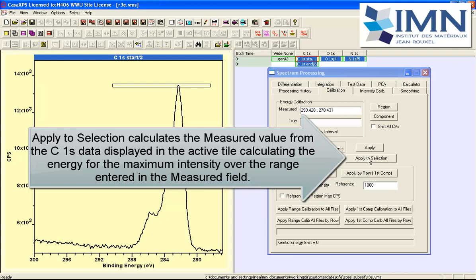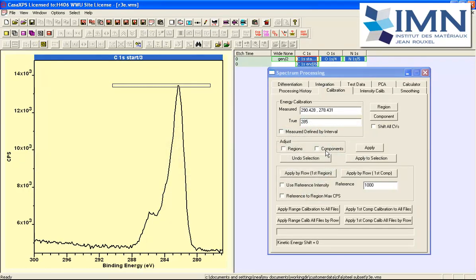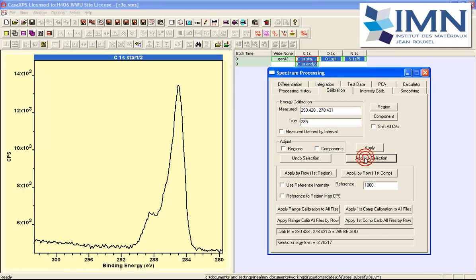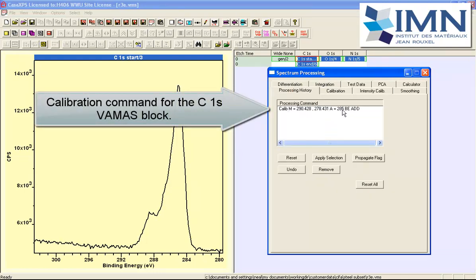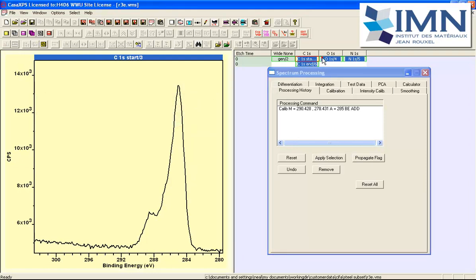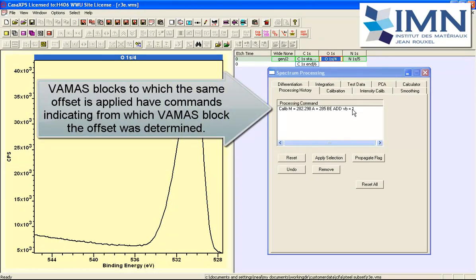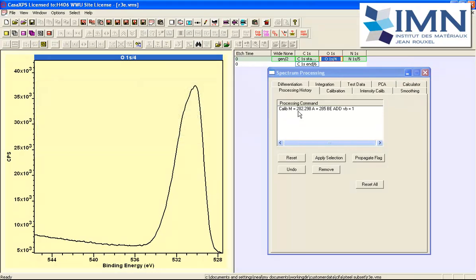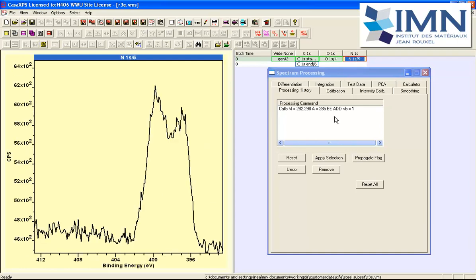We have no regions and no components defined so in this case we don't need to tick those boxes and we just say apply to the selection. The selection is this selection in the right hand side and all of these now receive an instruction that is based on the calculation that's performed on the C1s that's displayed in the active tile. And then we have corresponding commands that indicate the measured that was calculated from the carbon and the actual that was entered on the window and it says that it's from VB equals 1 so this is VAMAS block index 1 where the calculation was performed and has been used in the oxygen and also the nitrogen.